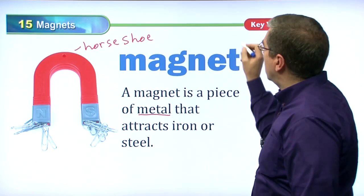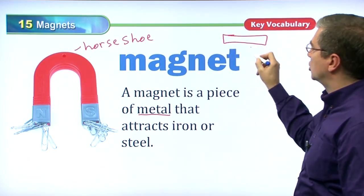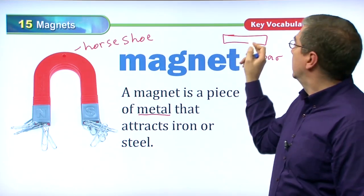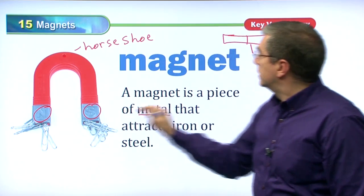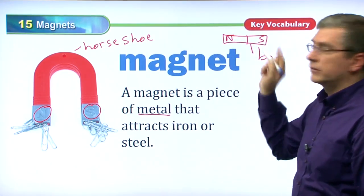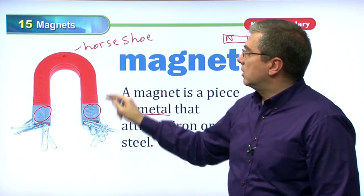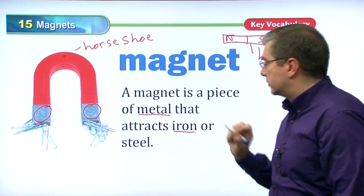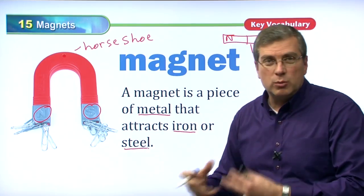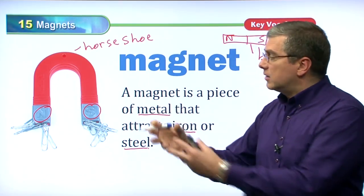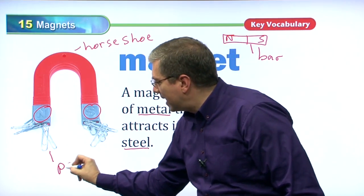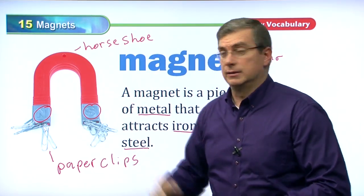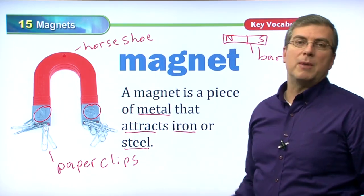Some magnets are shaped like a horseshoe, but many other magnets are just shaped like a bar. So magnets have horseshoe shapes and bar shapes. One end is north, the other is south. A magnet is a piece of metal in this shape or this shape that attracts iron or steel. Iron is a metal; steel is something human beings make from iron. You can see these paper clips — they're made of steel, have iron in them, and are attracted to the magnet.